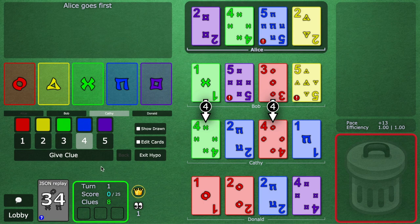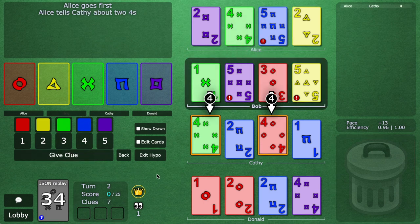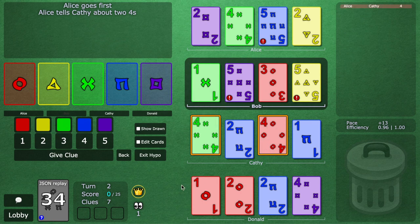So for example maybe this looks appealing to say hey you've got two fours and so now with one clue you've touched two cards. But the problem is we haven't actually advanced our goals right? This clue will not help us play any cards. Fours would not lose us the game if we discarded them. So it's just like okay cool there are some fours.